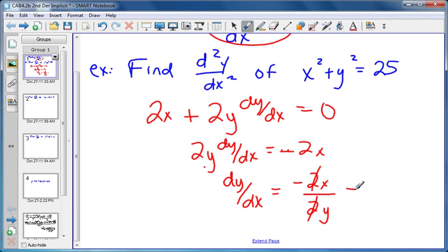The 2's cancel, so we end up with negative x over y as our first derivative.